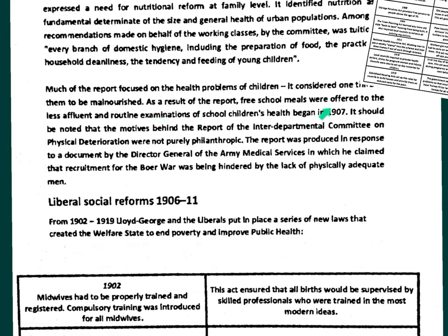As a result of the report, free school meals were offered to less affluent children and routine examinations of school children's health began in 1907. It wasn't just a charitable thing - the army was worried they wouldn't be able to recruit enough physically adequate men. Either way, the Boer War triggered a change, with welfare beginning to be put in place for those who were less well-off.